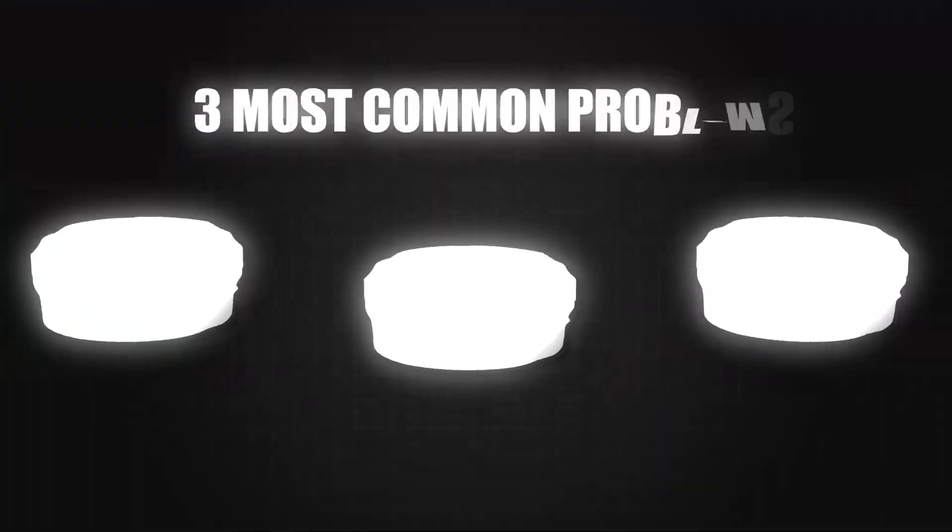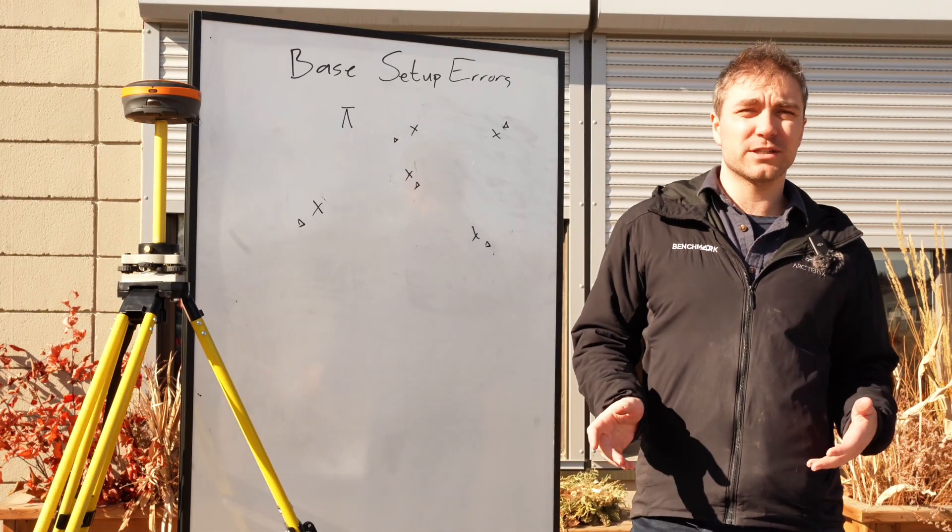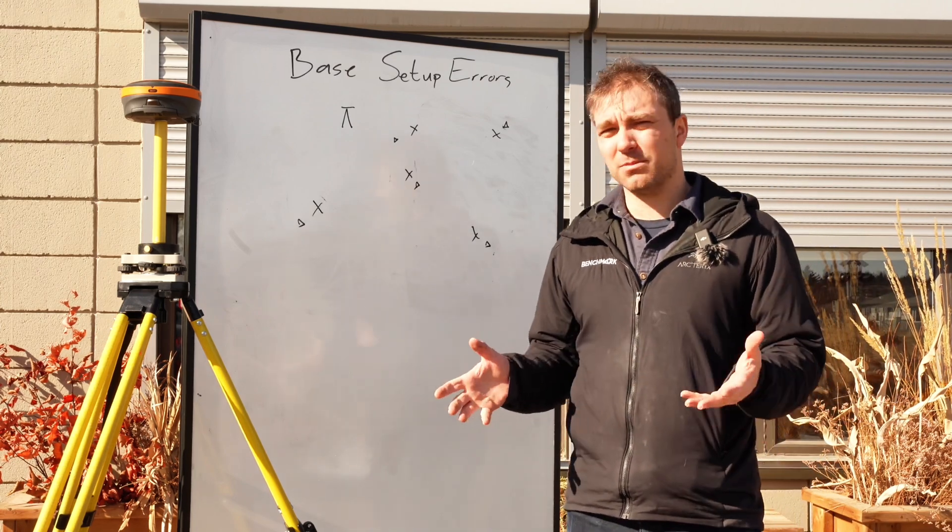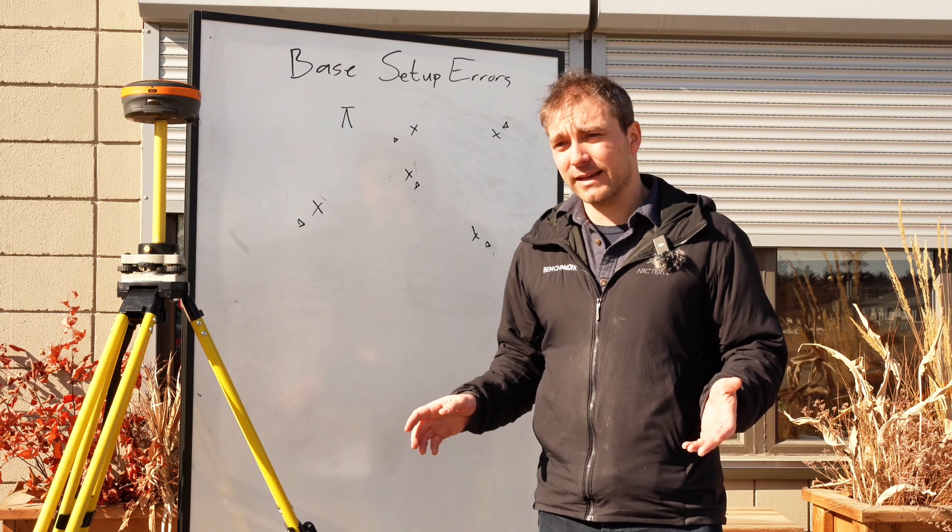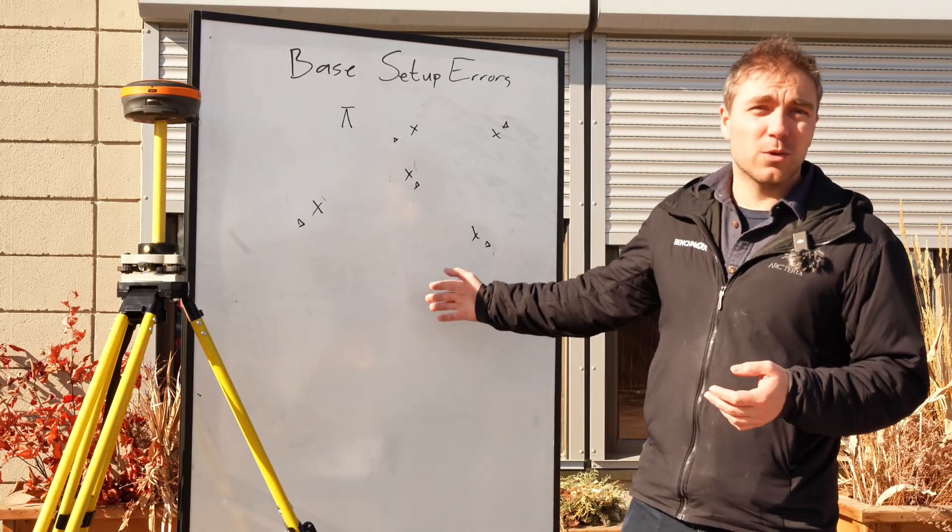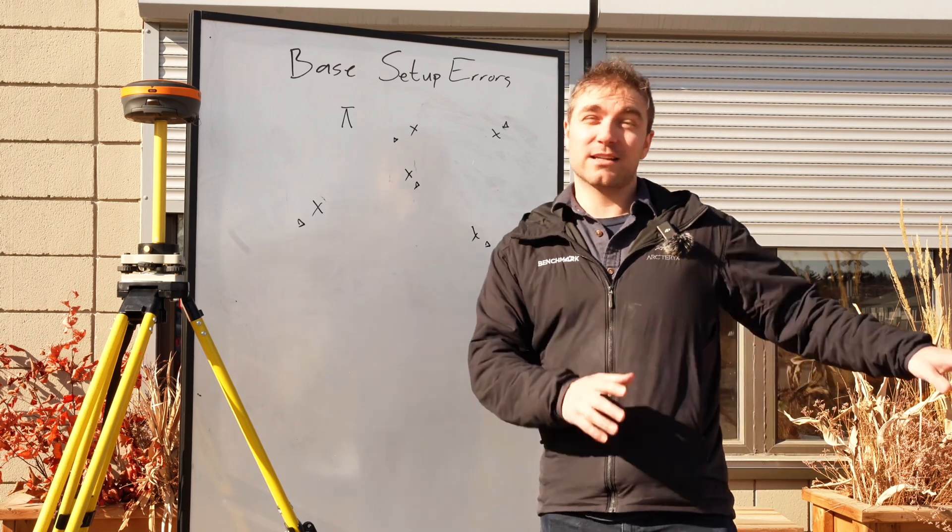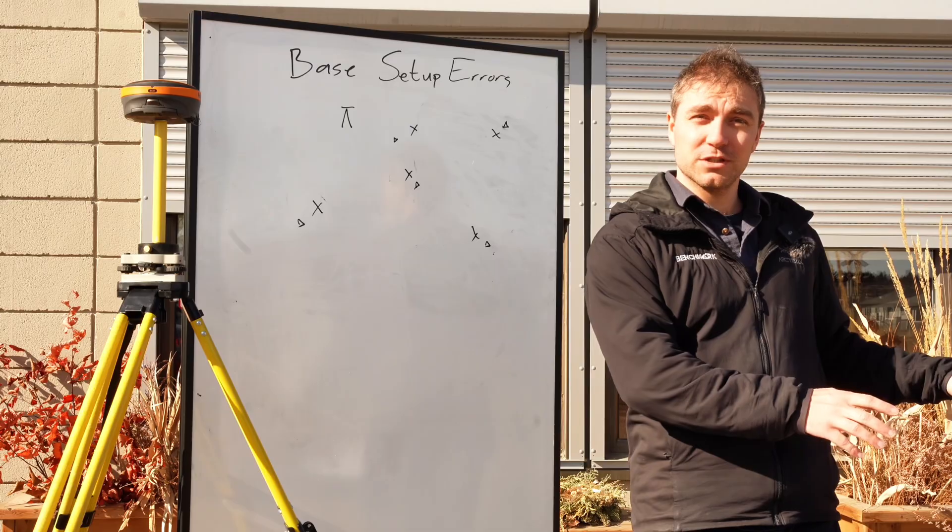Our third problem today is when guys phone up and they have a random difference between all their points day one to day two, or an elevation difference, and their data just seems to be wonky, nothing seems to be lining up. Really everything looks like nothing should be accurate in the world and anything should work, but typically what causes this is the exact opposite of our last problem.